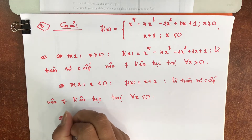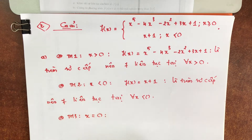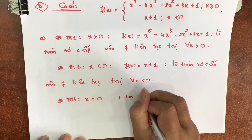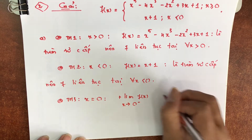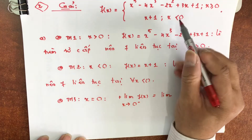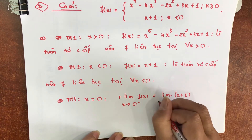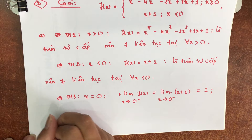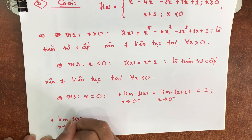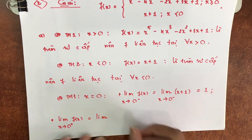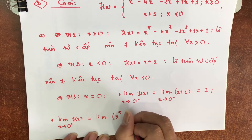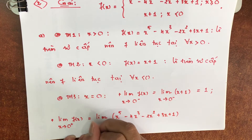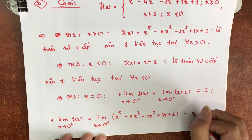Bây giờ tại x bằng 0, trường hợp 3. Bước thứ nhất chúng ta đi tính giới hạn của F(x) khi x tiến về 0 trừ. X tiến về 0 trừ là x nhỏ hơn 0, chúng ta thay F(x) bởi x cộng 1, khi x tiến về 0 trừ và thế x bằng 0 vào rõ ràng là 1. Giới hạn của F(x) khi x tiến về 0 cộng bằng giới hạn của x⁵ − 4x³ − 2x² + 7x + 1 khi x tiến về 0 cộng, thay x bằng 0 vào thôi, dễ thấy là 1.